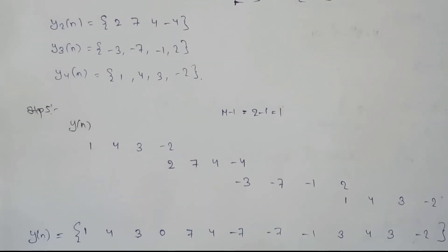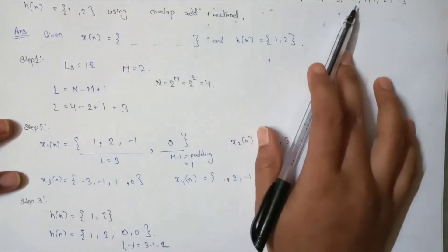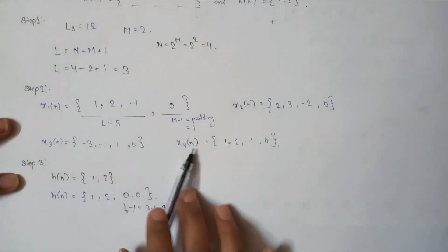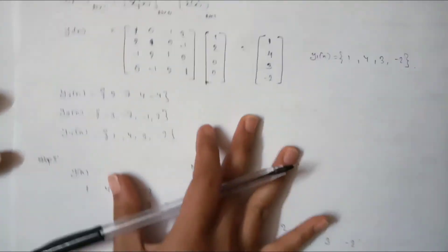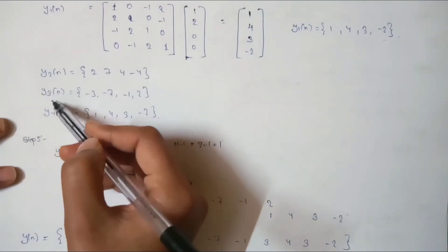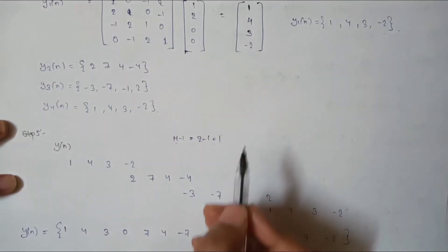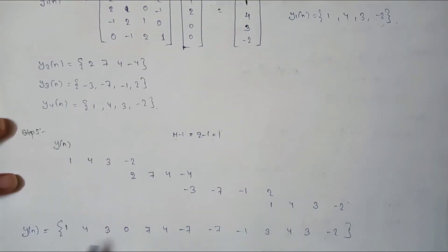To recap: we took the long sequence x(n) and the small impulse response h(n), calculated L, M, and N values, formed 4 sub-sequences, convoluted each with the impulse response to get 4 y(n) sequences, then added M−1 overlapping terms between consecutive blocks to produce the final output sequence.